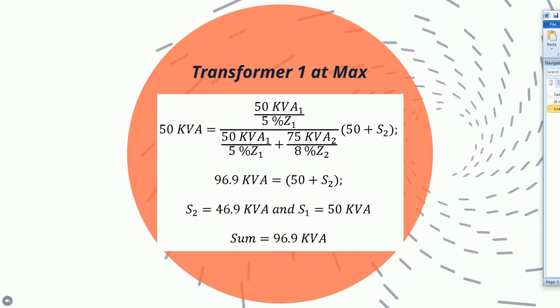First, let's assume that Transformer 1 is maxed out at its rated capacity of 50 kVA. We plug in the values of the rated capacity and percent impedance for Transformer 1 and Transformer 2 in order to solve for S2, the power flow through Transformer 2. After solving, we find that S2 is 46.9 kVA, and the assumed power flow through Transformer 1 is 50 kVA, giving a sum of 96.9 kVA.